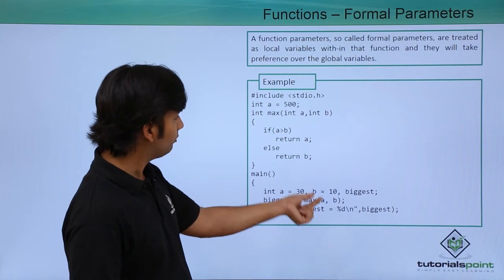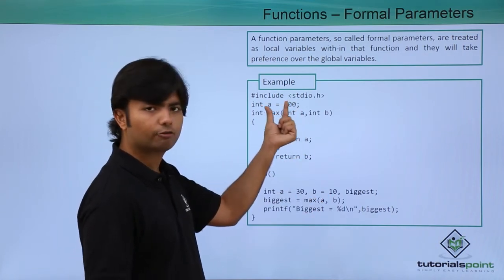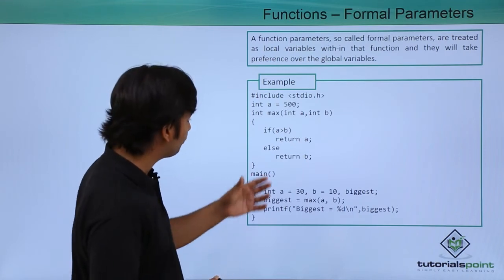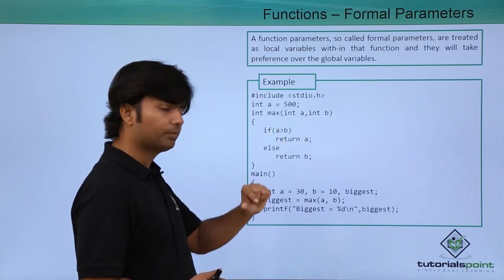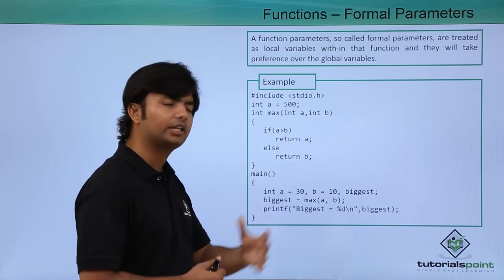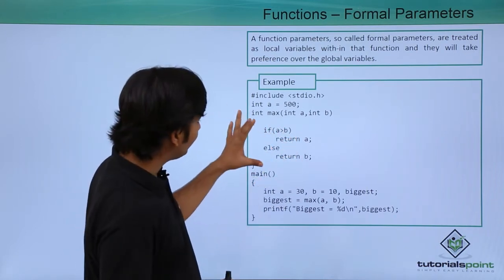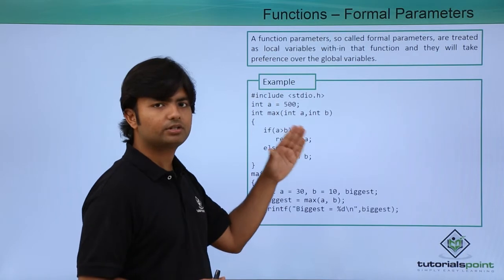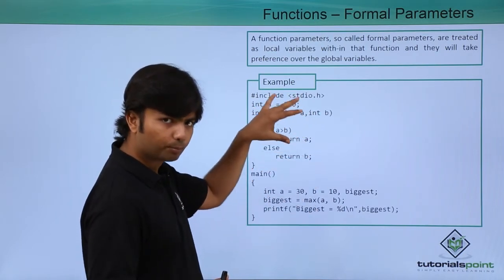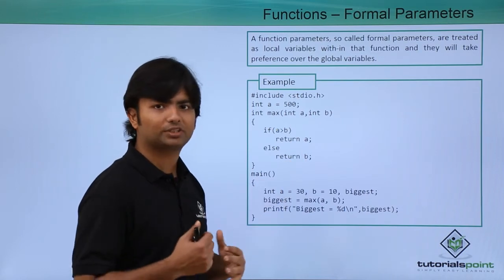Now, this value of a will be copied to this formal argument a, and similarly the same case will be with b also. By the time you are working with this particular expression 'a is greater than b', again inside this method we have a parameter named a, so for max this a formal parameter is more specific, more closer.